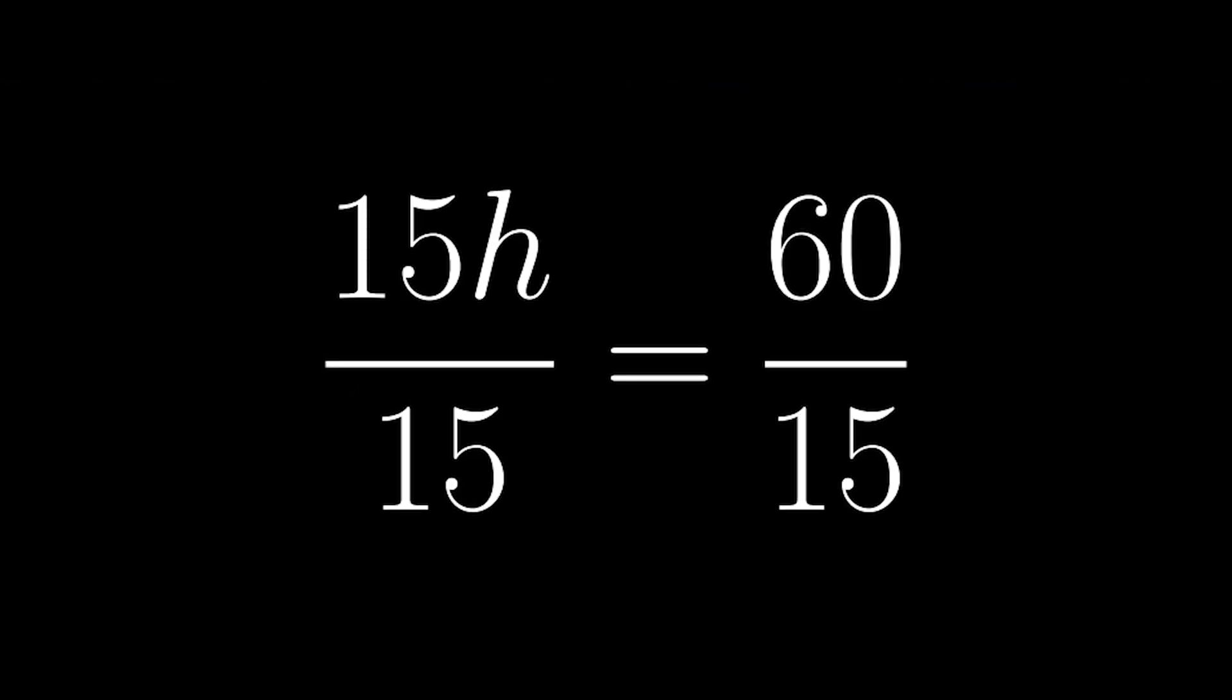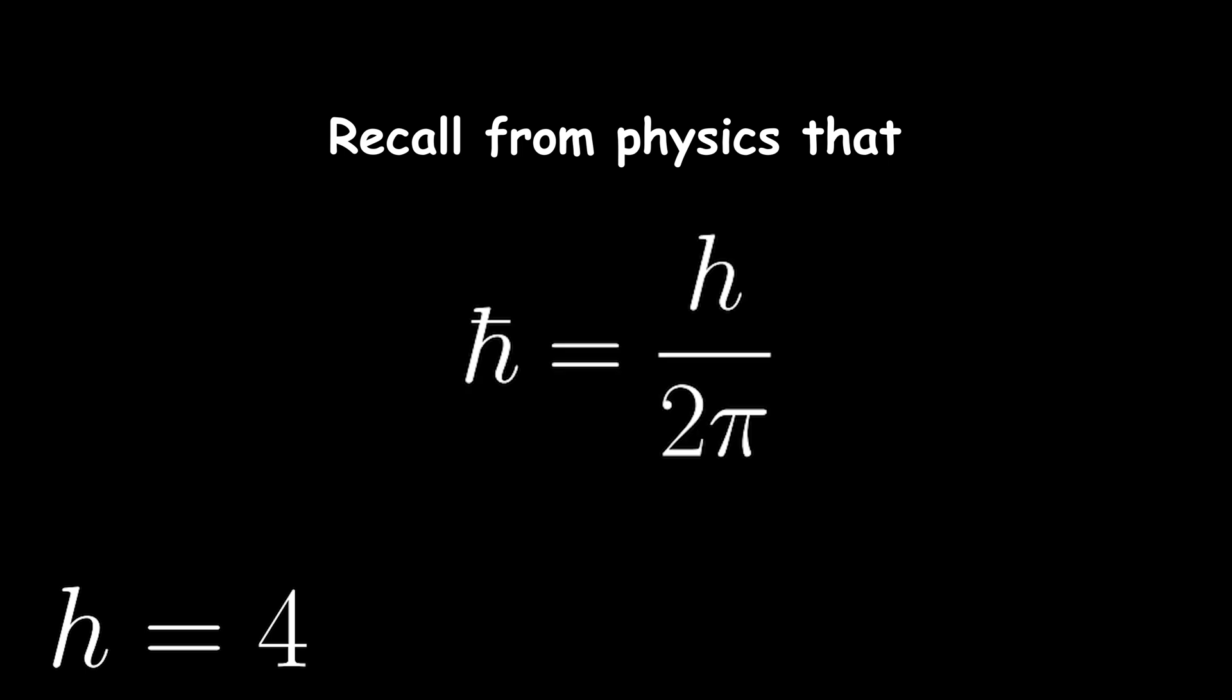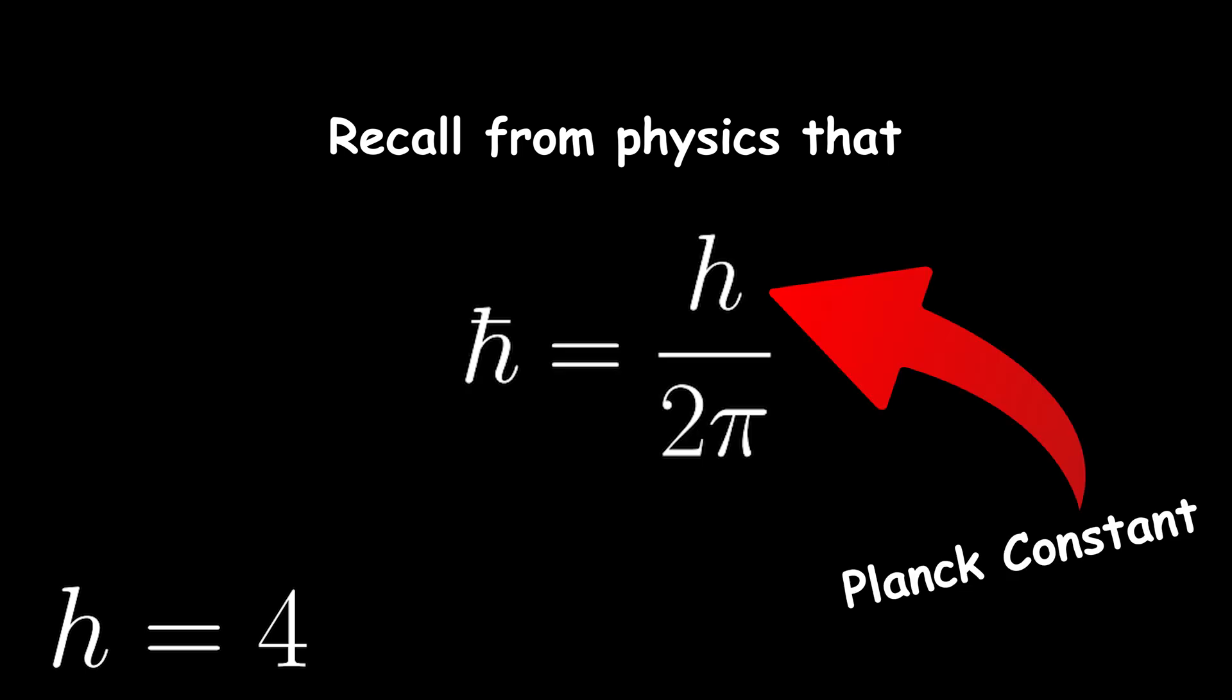Now we can divide both sides by 15 to obtain that h equals 4. Now recall from physics that h bar equals h over 2 pi, where h is the Planck constant.